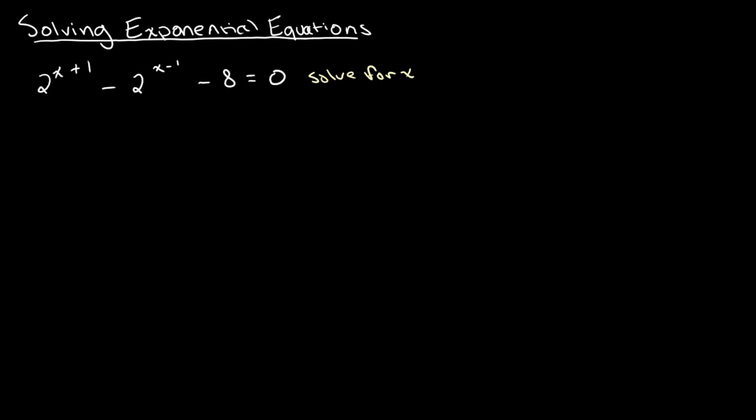If you watched my previous video or if you already have some experience in solving exponential equations, then you probably know that when solving them, one of the first steps is to take log on either side. So let's first move the 8 over. We have 2 to the power of x plus 1 minus 2 to the power of x minus 1 is equal to 8.